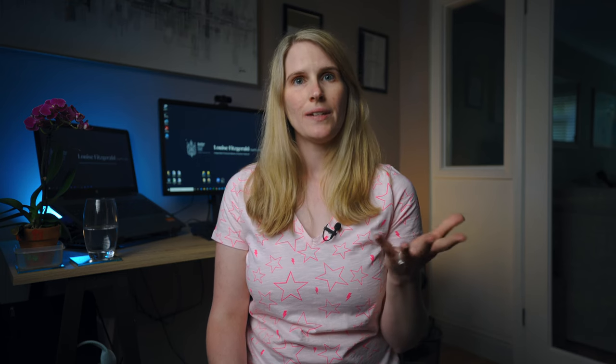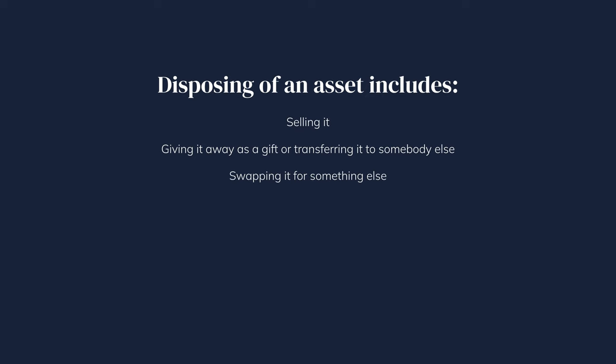So what is disposing of an asset? Disposing of an asset includes selling it, giving it away as a gift or transferring it to somebody else, swapping it for something else, or getting compensation for it such as an insurance payout if it's been lost or destroyed.